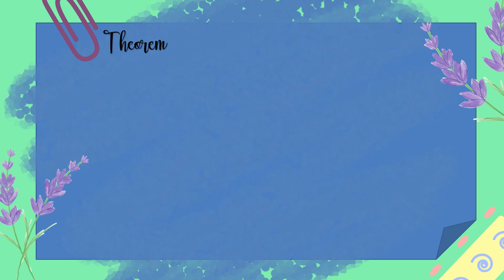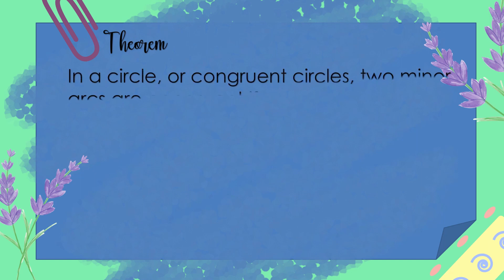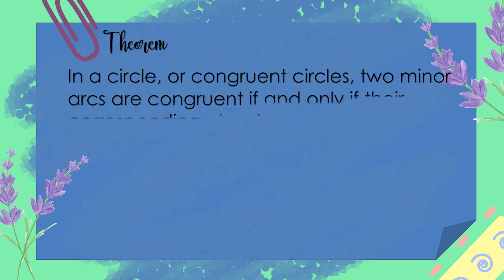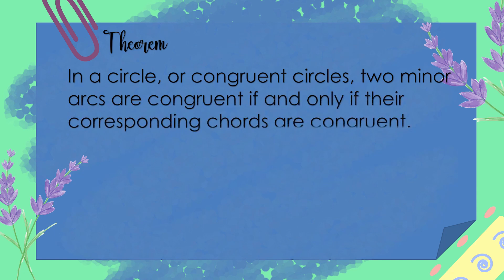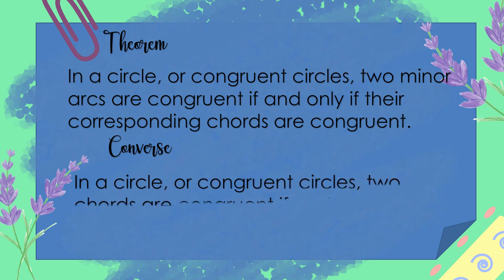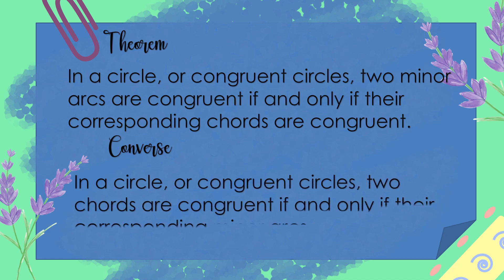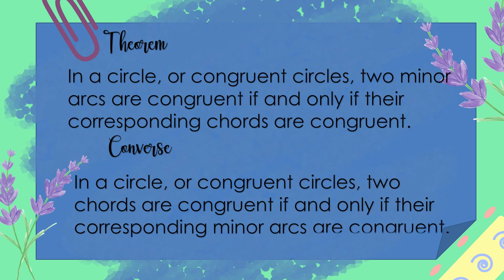Let's start. The first theorem is: in a circle or congruent circles, two minor arcs are congruent if and only if their corresponding chords are congruent. The converse is obtained by switching the hypothesis and conclusion: two chords are congruent if and only if their corresponding minor arcs are congruent.